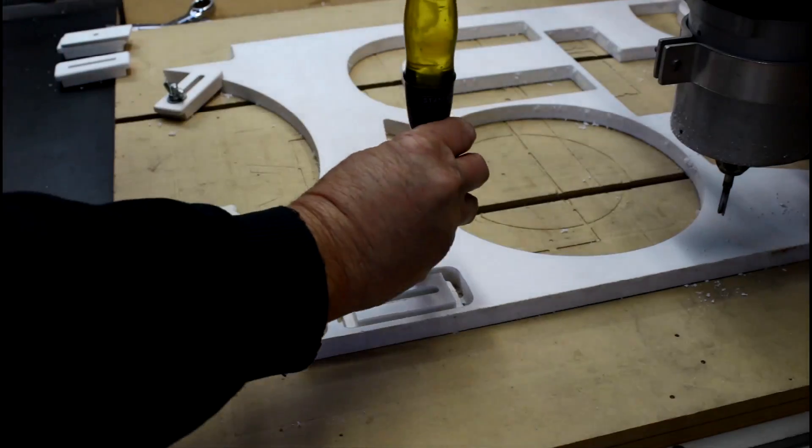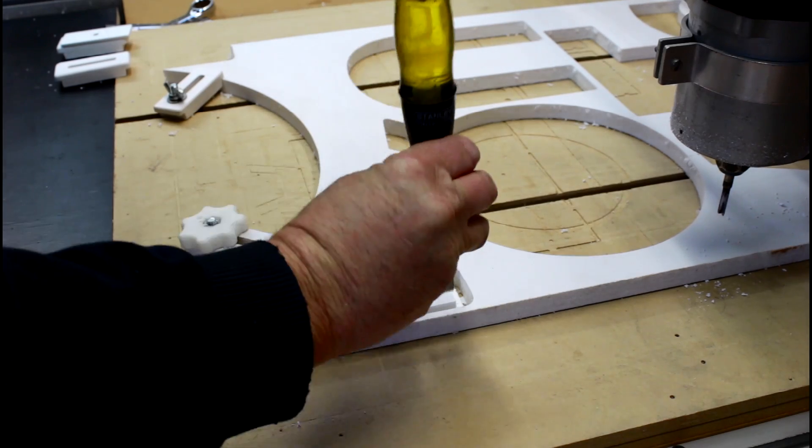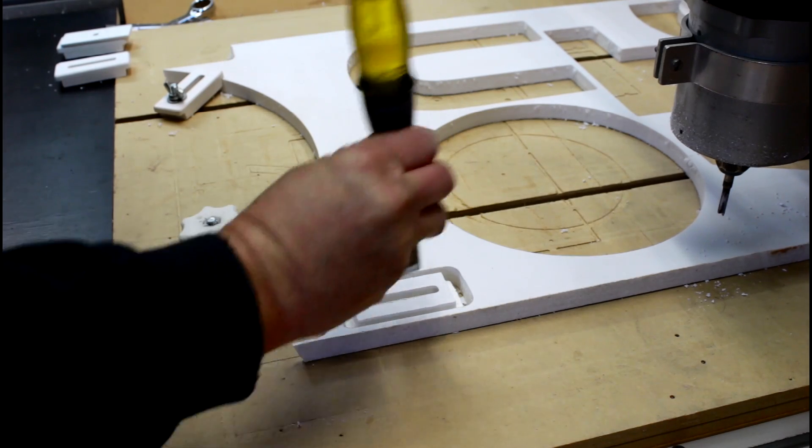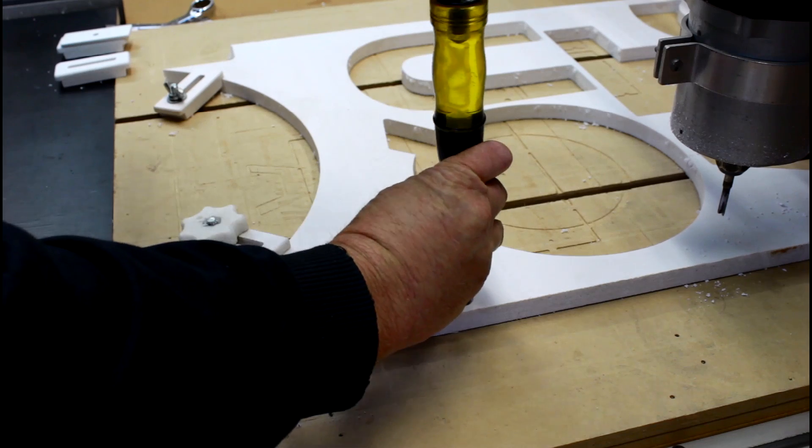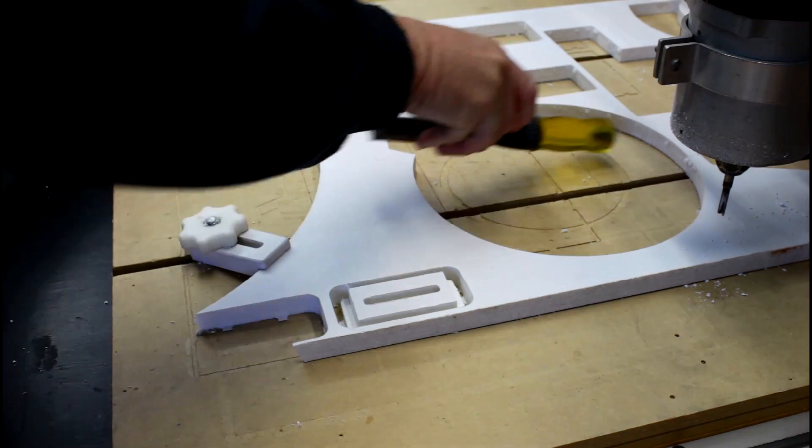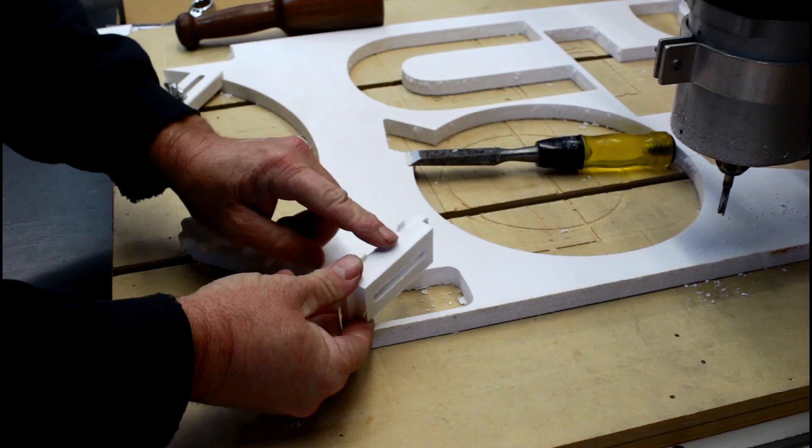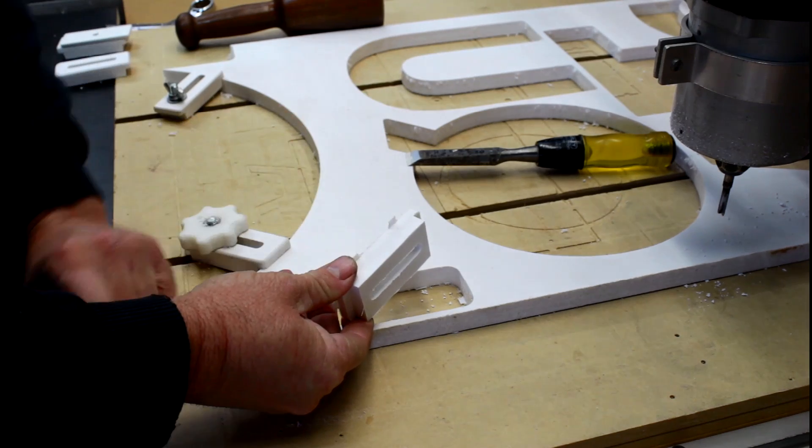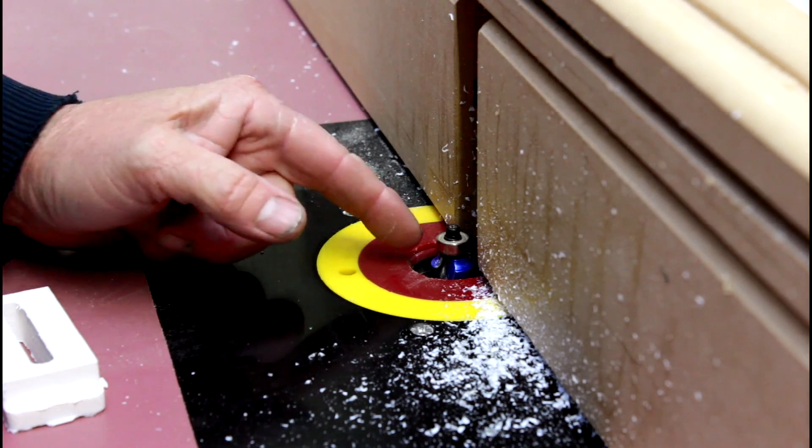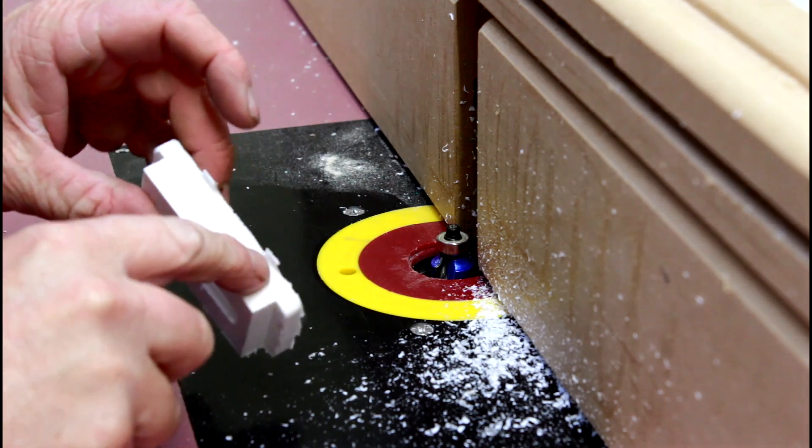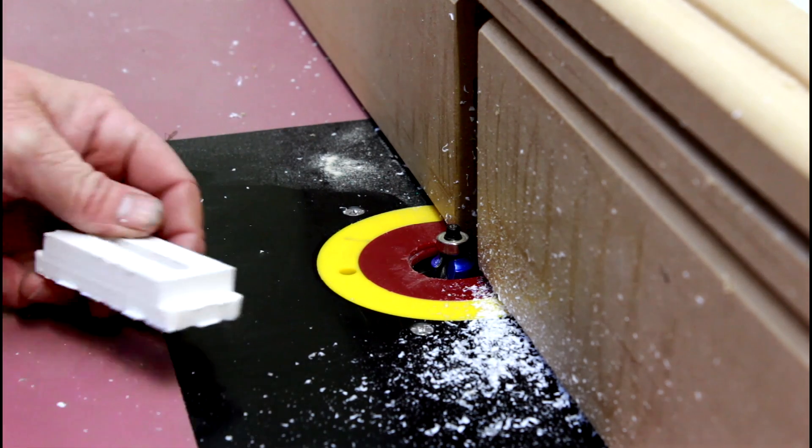I can quickly and easily remove the item with a chisel. Now I can clean this up on my router table. I'm using a three millimeter round over bit to remove the holding tabs and round over the top.